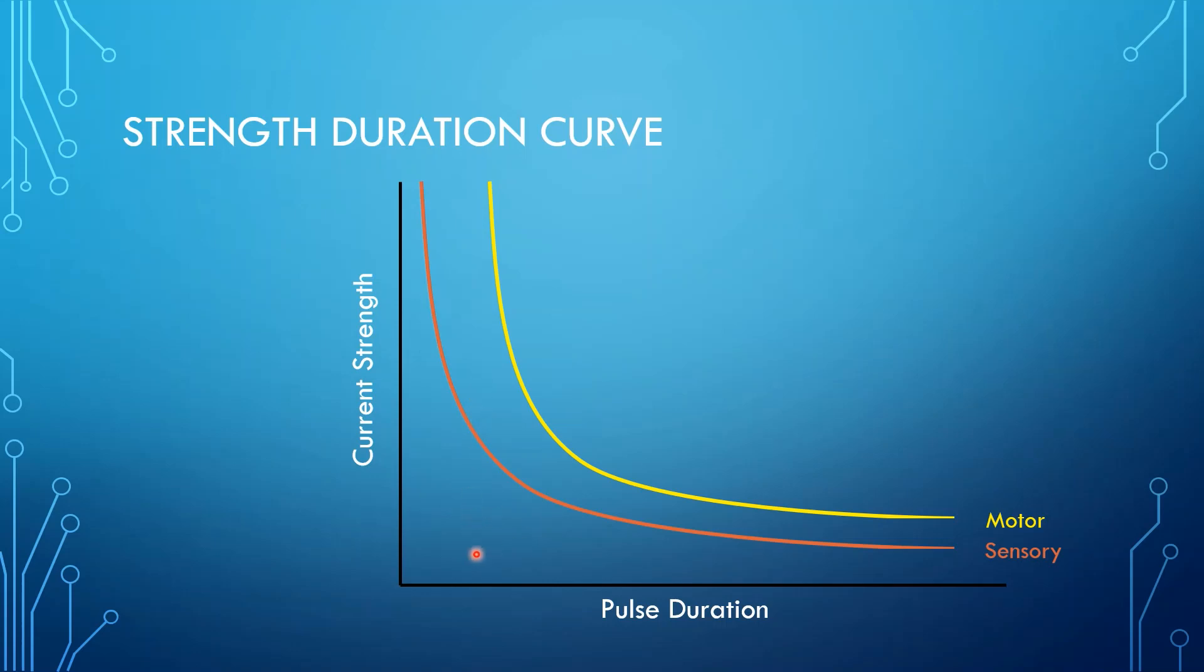You could cross that sensory curve by having a particular current strength and then gradually increasing the pulse duration until right there, you've again crossed the sensory strength-duration curve.